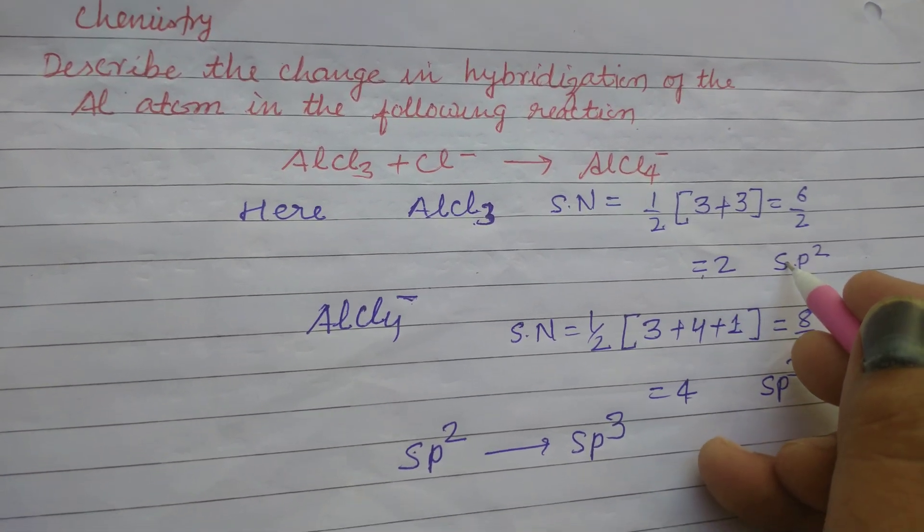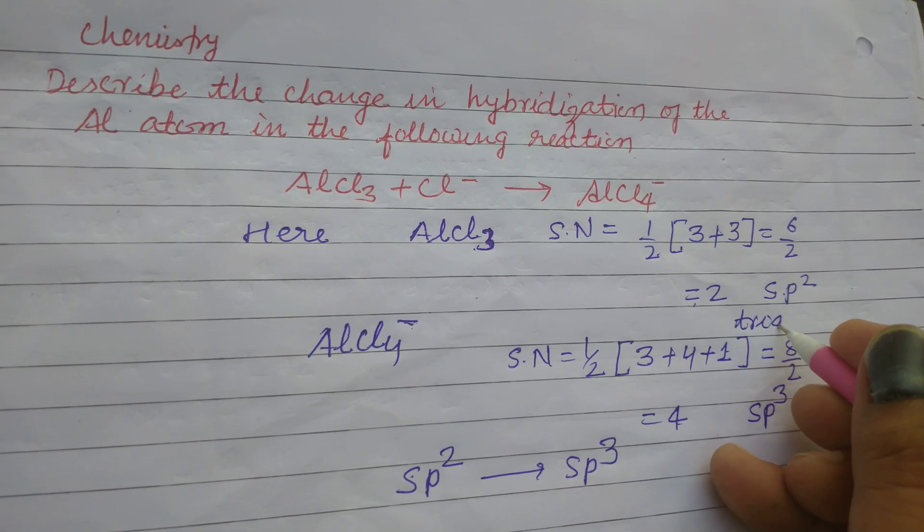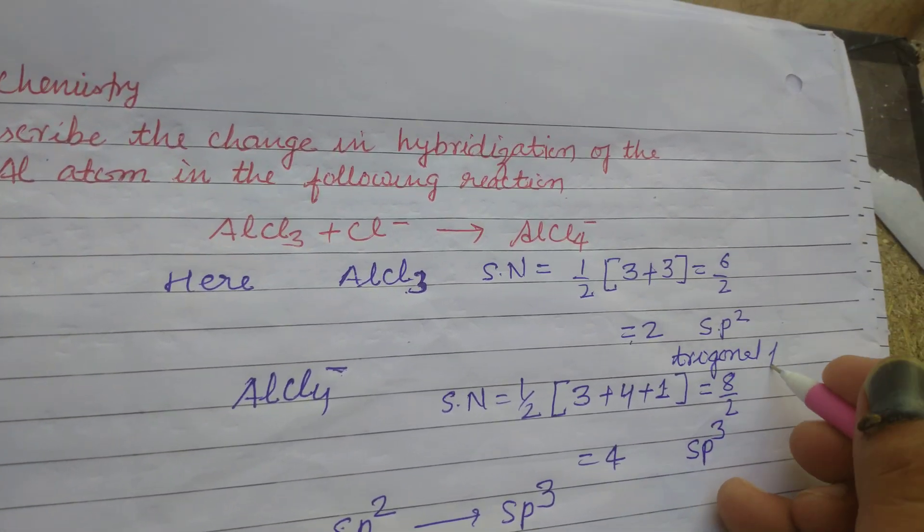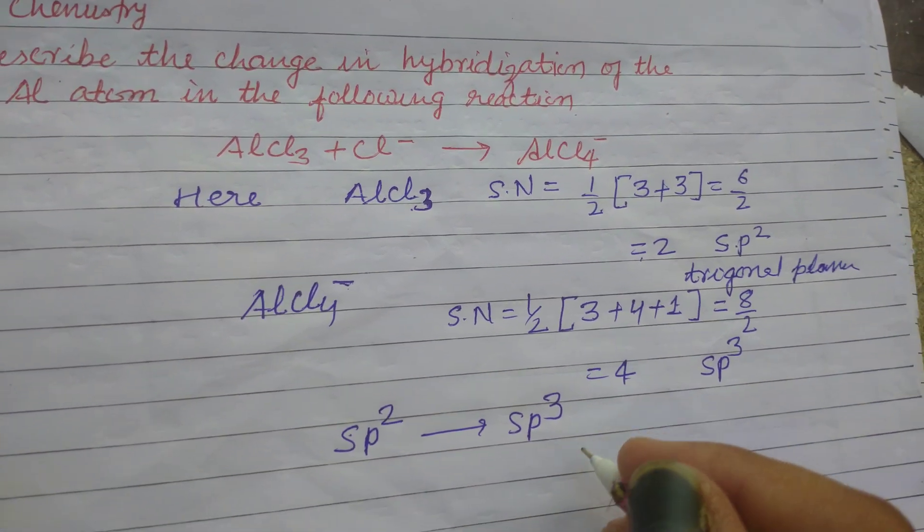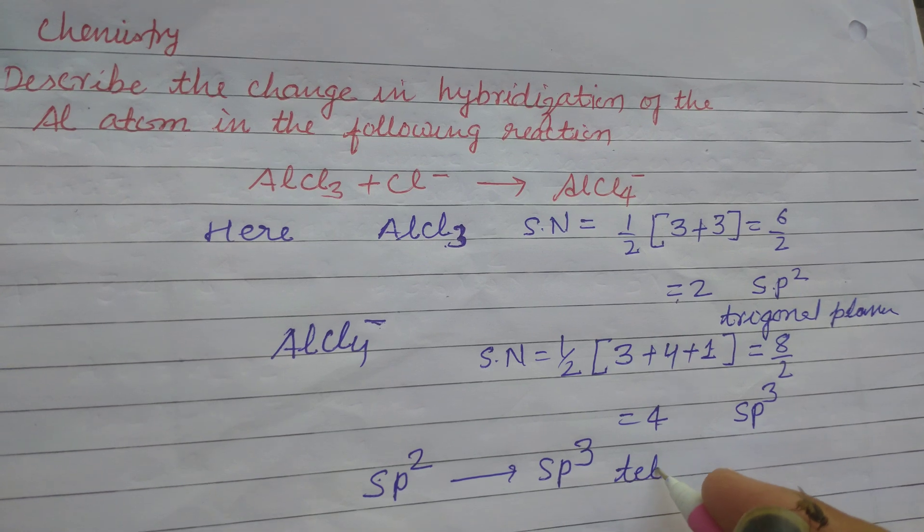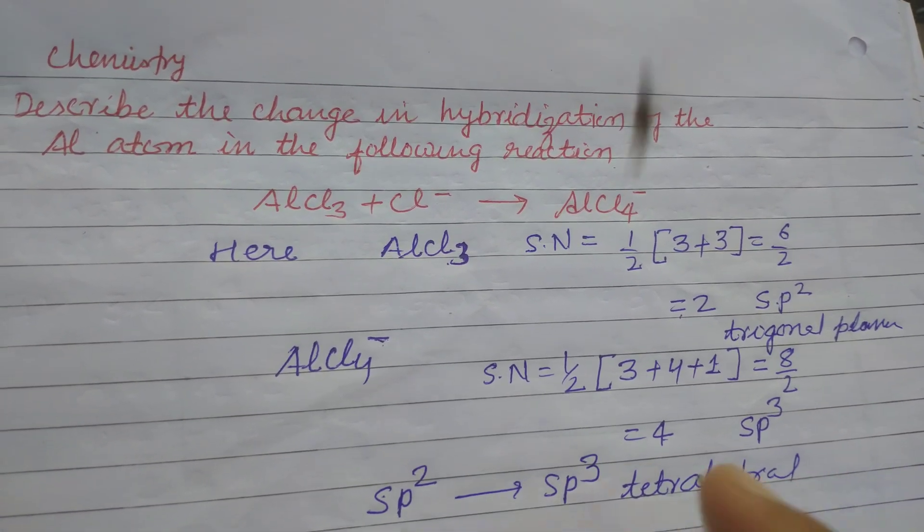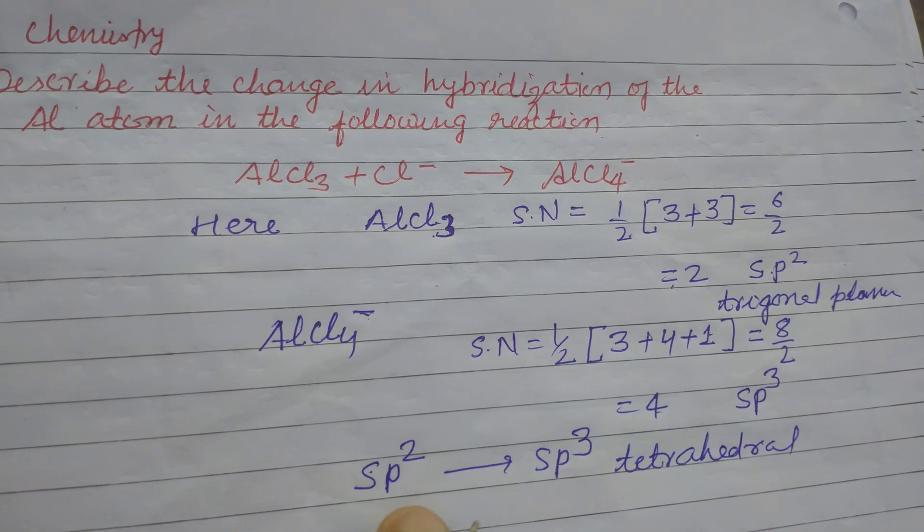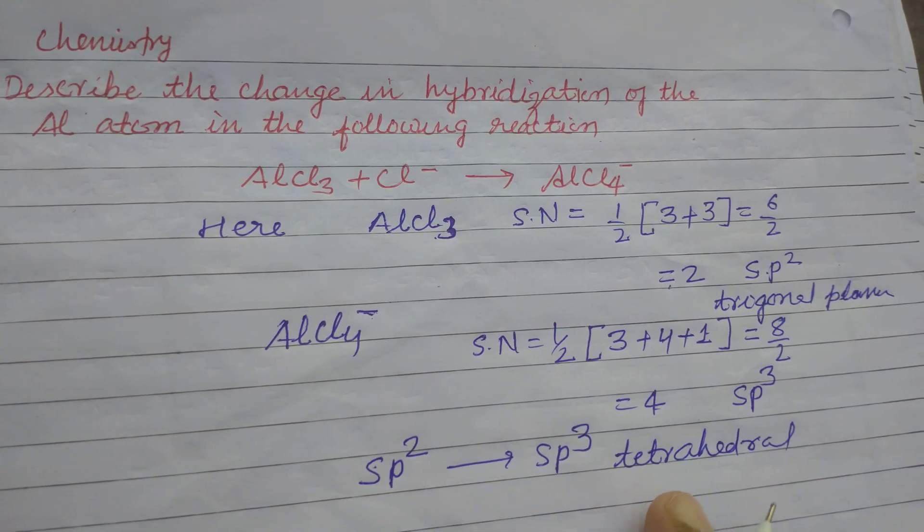Here sp2 has trigonal planar structure, while sp3 has tetrahedral structure. You can also write the changes in the shape of the compounds from trigonal planar to tetrahedral.